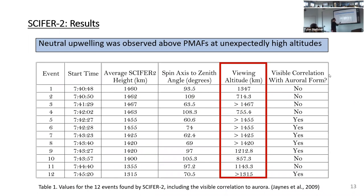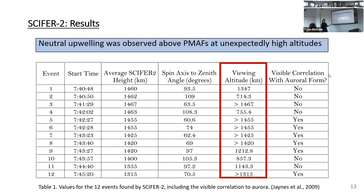One of the other extremely key findings from these 12 events was the viewing altitude. The lowest altitude at which we saw these events was around 714.3 kilometers, going up to above 1455 kilometers. These are extremely high altitudes to see enhanced neutral densities — it was unexpected. We saw neutral upwelling above PMAPs at unexpectedly high altitudes.